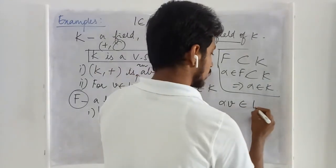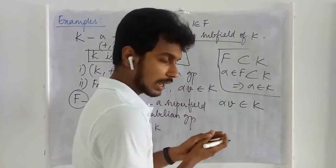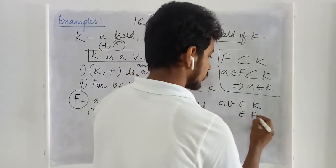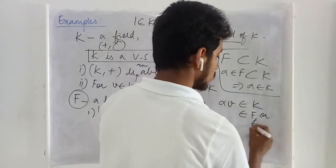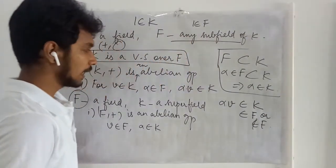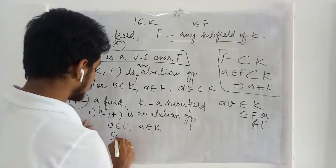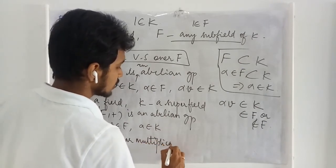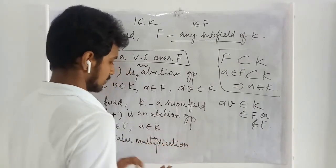But I do not have any guarantee that this must be a member of F. This may be or may not be the case. Hence scalar multiplication is not well defined in this case. Hence it is not a vector space.